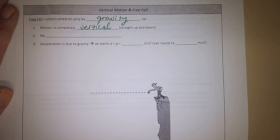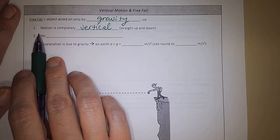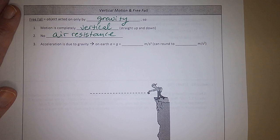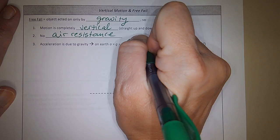Okay, alright, so free fall: object acted only by gravity. Motion is completely vertical, it only goes up and down. We neglect air resistance, so we say that there's no air resistance. And acceleration on Earth due to gravity is a constant negative 9.81 meters per second squared.